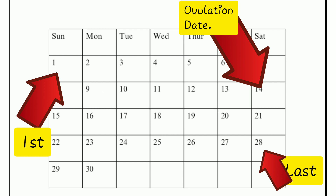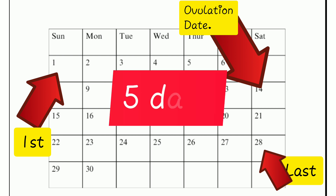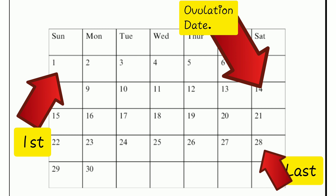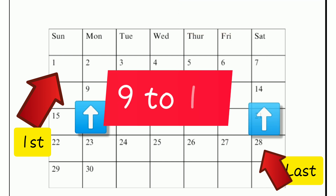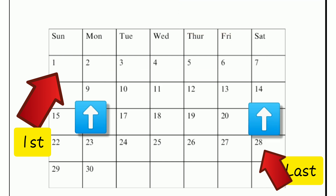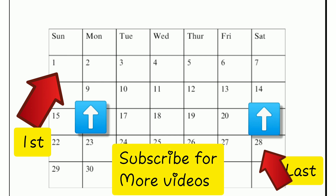If you want to get pregnant, keep that in mind. The sperm spends almost five days in the female reproductive tract. So from around the 9th day to the 14th day, if you do want to get pregnant, those are the days you need to consider most.